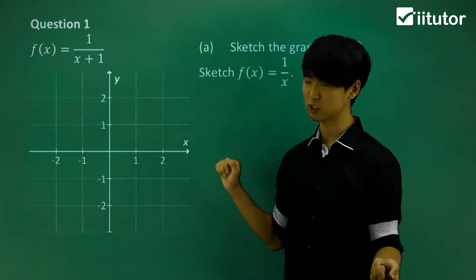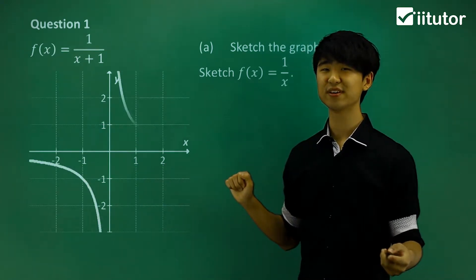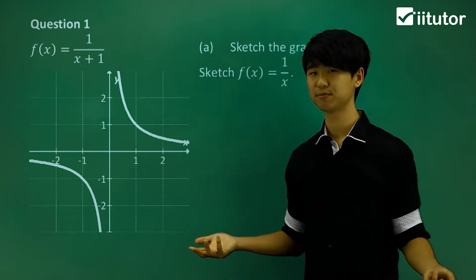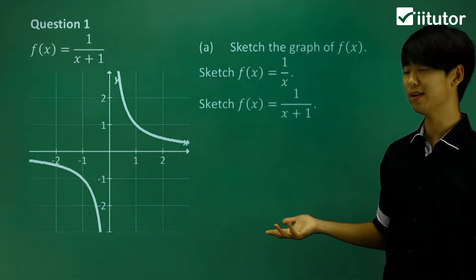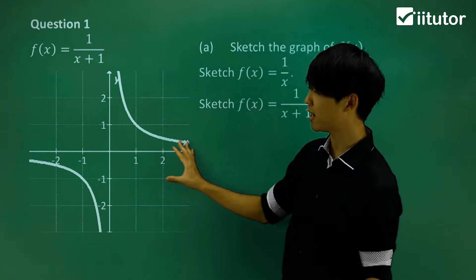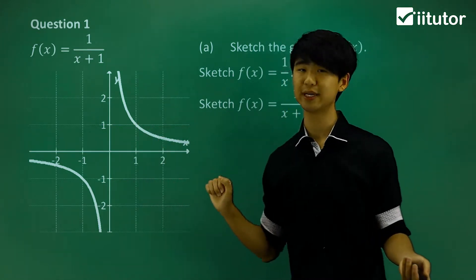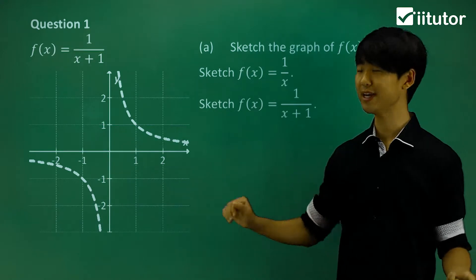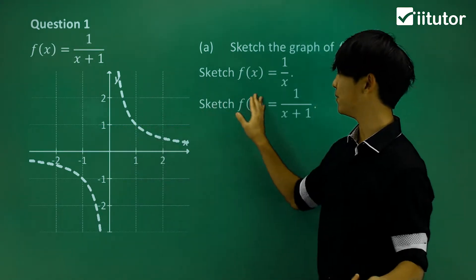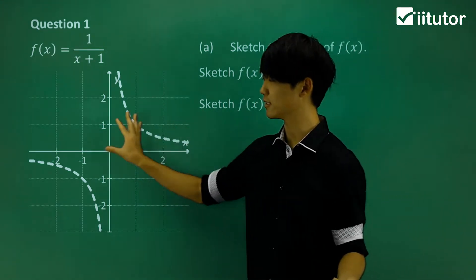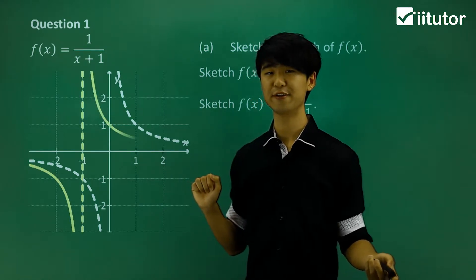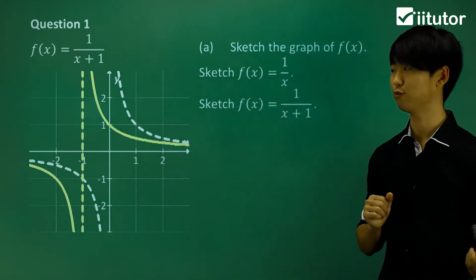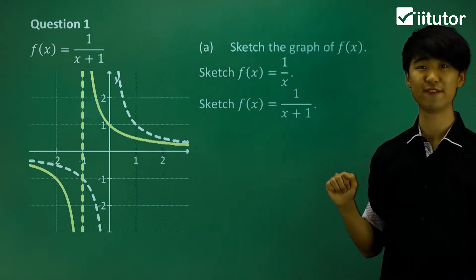Hopefully we know how to draw this basic graph by now. So this is my hyperbola, 1/x. From there, if I want to sketch 1/(x+1), it's going to be the same graph but shifted — a translation to the left by 1 unit. So the graph gets shifted 1 unit to the left, and my asymptote will be the new one: x = -1. That's how I sketch that function.